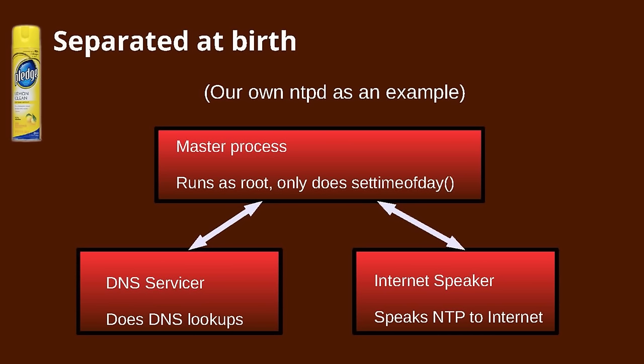Our NTP daemon — this is a simplified diagram of what we actually did. It has three processes that communicate with pipes. The main process starts up running as root, but in the end after spawning the two other service processes, it's only supposed to set or adjust the time of the machine. One of the other processes is a network speaker which talks the NTP protocol to various hosts on the internet and learns time information.